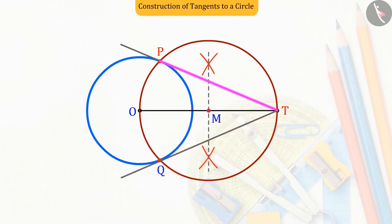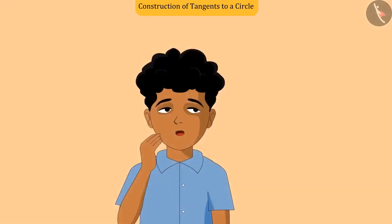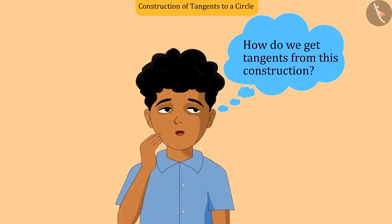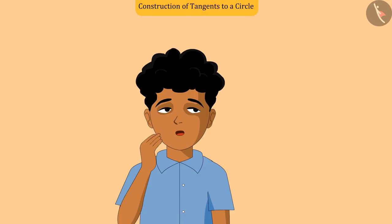Now we will find out, using the properties of tangents, whether the two lines PT and QT are tangents to the circle. Let us see how.